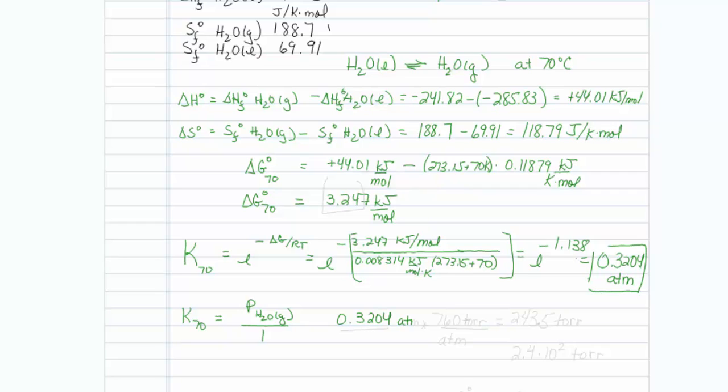So I will take this and multiply it by 760 torr, or millimeters of mercury per atmosphere, and my number comes out to be 243.5 torr.